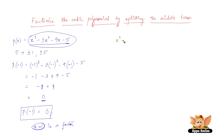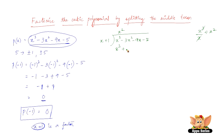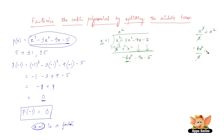Let us go ahead and divide x³ - 3x² - 9x - 5 by (x + 1). The first term of the quotient will be x², because the first term of the dividend divided by the first term of the divisor gives x². Multiplying x² by the divisor: x² times x is x³, and x² times 1 is +x². Subtracting, x³ terms cancel, and we have -3x² minus x², which is -4x².